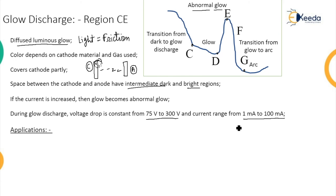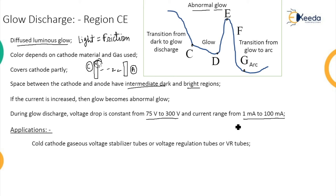Applications of glow discharge include: cold cathode gaseous voltage stabilizer tubes, also called VR tubes, which are used for rectification; relaxation oscillators; and amplifiers that amplify signals.